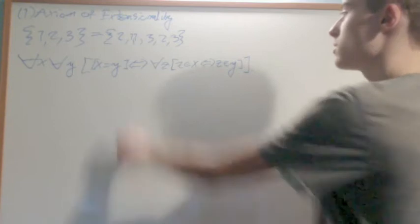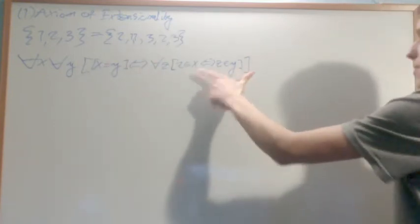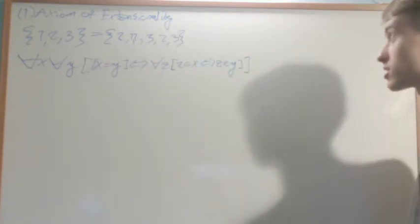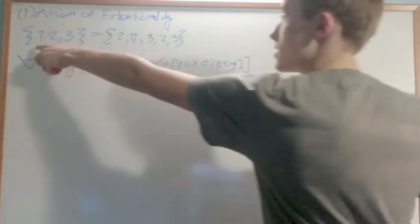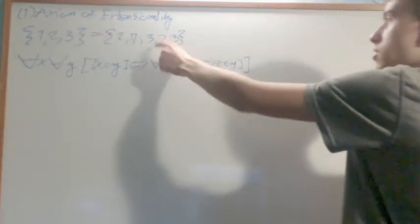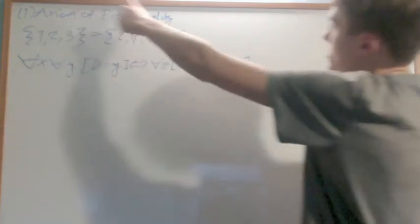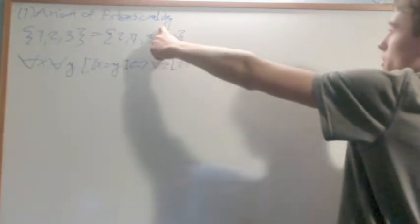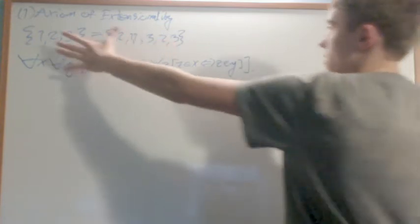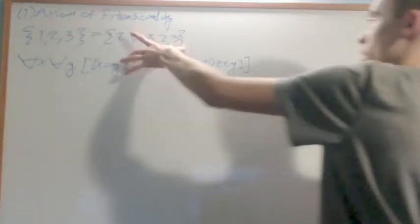They have the same elements. X is equal to y if and only if they have the exact same elements. It doesn't matter about the order — 1 is an element of this implies 1 is an element of that, 3 is an element of this implies 3 is an element of that, 2 is an element of this, 2 is an element of that. There's nothing in this that's not in that, and everything in this is an element of that.